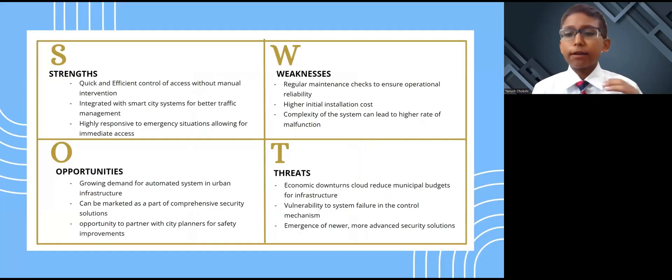Looking at retractable bollards also diving for our SWOT analysis. Strengths: Our system excels with automated rapid access control, easily integrating with smart traffic solutions and providing immediate response in emergencies. Weaknesses: We're working on mitigating the higher initial cost and system complexities which necessitate regular maintenance for reliable operation. Opportunities: The surge in demand for automated urban solutions shows great opportunities for partnering with city planners for safety and security innovations. Threats: Economic variability may tighten infrastructure budgets and we must stay vigilant against potential control system failures. This SWOT framework will steer our strategies to enhance product reliability and market competitiveness.